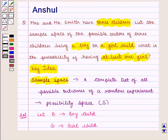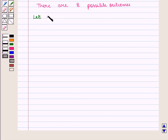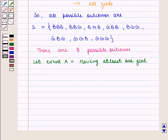Next we need to find the probability of having at least one girl. So let event A be equal to having at least one girl. It means it can have minimum one or more than one girl. And favorable outcomes from sample space will be all the outcomes that favor the event of having one or more than one girl.